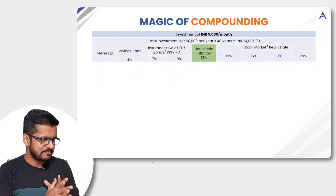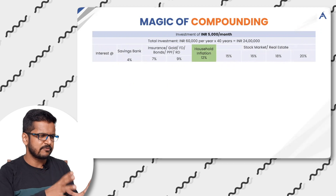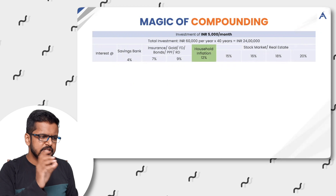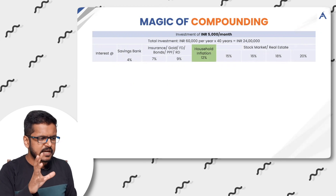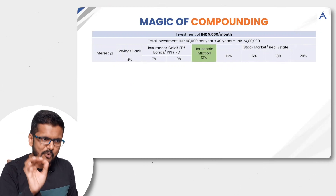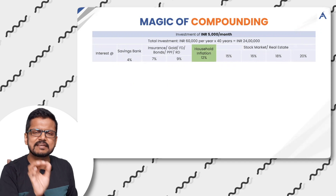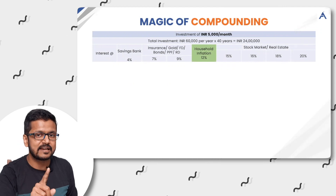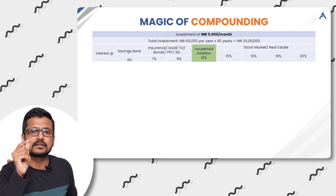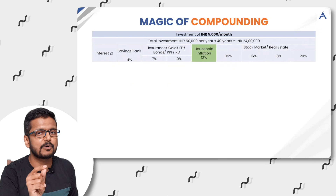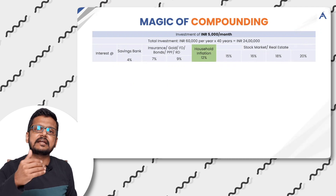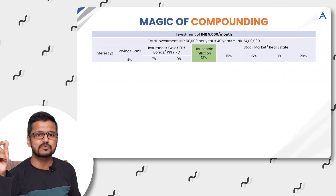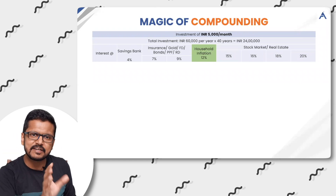If you look at the returns: saving bank at 4% — or a debt mutual fund — gives that. Insurance, gold, FD, bond, PPF and RD returns are between 7% to 9%. Yes, gold has also given returns between 7% to 9% compounded annually in the last 40 years — but this is in INR. If you look in dollar terms, returns in gold are around 2% compounded annually. We earned more in INR because the INR depreciated. So the INR has to depreciate in the same way for the next 40 years for gold to give the same 7–8% returns.